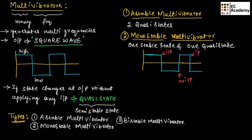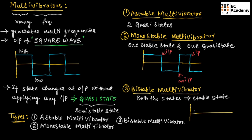In a bistable multivibrator, both states are stable states. If the square wave is in the high state, we need to apply an input to change it to the low state. Again in the low state, we need to apply an input to change it back to the high state. If we don't apply any input, the state will not change. So to change any state at the output, we require an input in the bistable multivibrator.